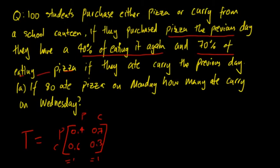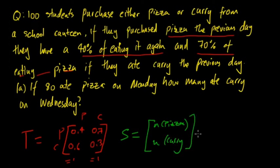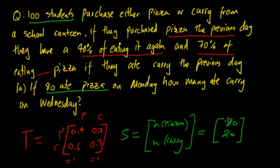Then what is the initial condition? So what is S? So S is equal to, previously we were working at the probability but now we look at the number of people eating pizza and the number of people eating curry. And that is given by the question, if 80 ate pizza, how many ate curry? Well initially it says 100 students purchased it, so obviously that's going to be 20. So look at that, we've got the transition and we've got the initial state. So this is on Monday.